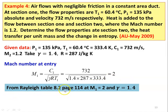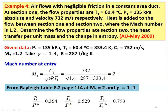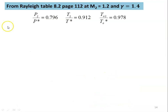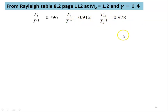From Rayleigh table 8.2, page 114, at M1=2, gamma=1.4: P1/P*=0.364, T1/T*=0.529, T01/T0*=0.793. From Rayleigh table 8.2, page 112, at M2=1.2, gamma=1.4: P2/P*=0.796, T2/T*=0.912, T02/T0*=0.978.